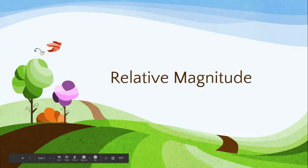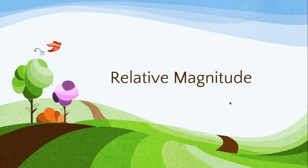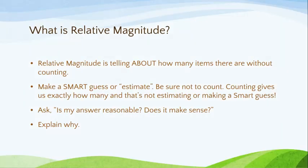Hi first graders, today we are going to be learning about relative magnitude. Relative magnitude is telling about how many items there are without actually counting. You need to make a smart guess or an estimate, but be sure not to count. Counting gives us exactly how many, and that's not estimating or making a smart guess. Ask: is my answer reasonable? Does it make sense? And remember, you're doing this without actually counting, and then it's important to be able to explain why you came up with this estimate.